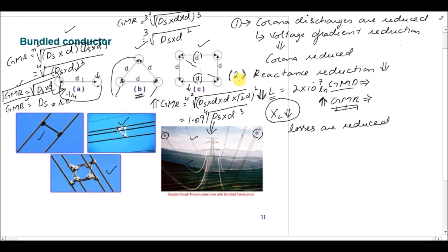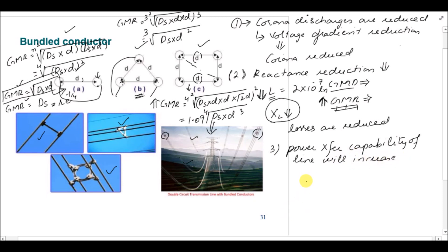The third advantage is that the power transfer capability of the line will increase. The power transfer formula for a transmission line is P = (E1 × E2 × sin δ) / XL, where δ is the transmission angle, E1 is the sending-end voltage, E2 is the receiving-end voltage, and XL is the line reactance. So if XL is reduced, then the power transfer capability of the line is increased.